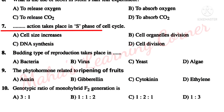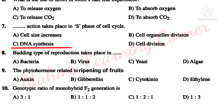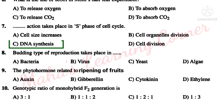What action takes place in the S phase of the cell cycle? Option A: Cell size increases. Option B: Cell organelles division. Option C: DNA synthesis. Option D: Cell division. Correct answer: Option C — DNA synthesis. In the S phase of the cell cycle, DNA synthesis takes place.